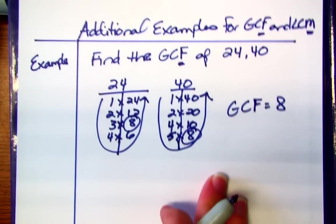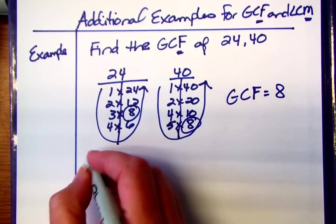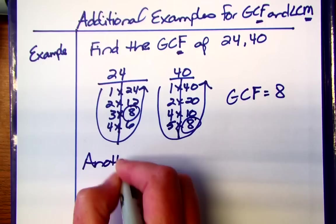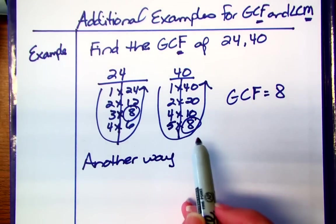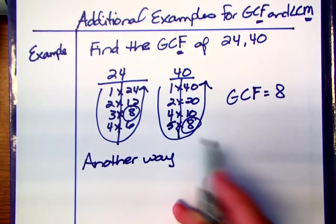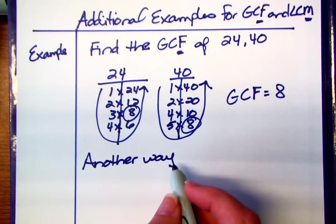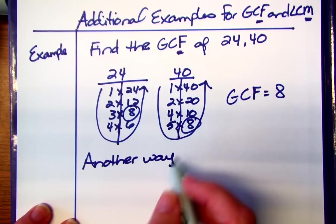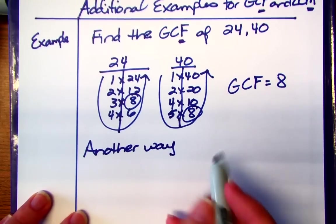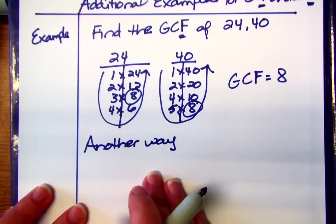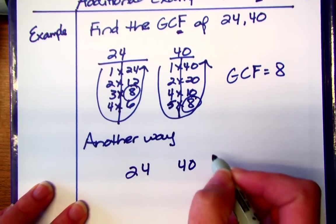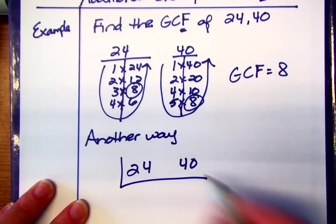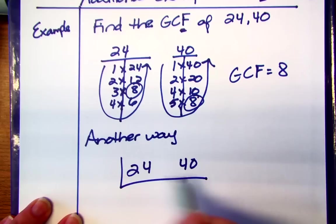Now I'm going to go ahead and show you another way. There's actually three different ways we can find it. I'm just going to show you this other way. You could do your prime factorization and then circle the ones that are in common. But this way is what we call the birthday cake way or the reverse division. You will not find this way in your textbook and that's why I'm doing this example. So the first step is to make your layer and then I'm going to look at what number can I factor out from that.